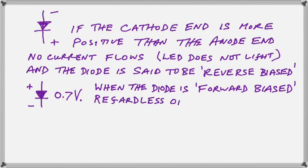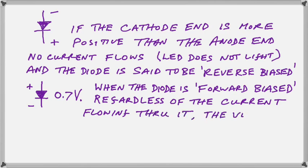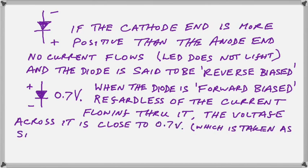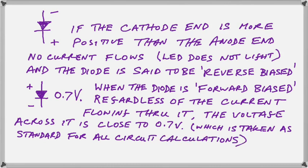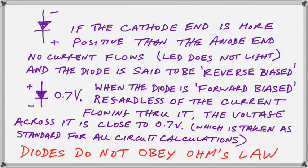Basically, notice I have 0.7 volts written next to the symbol. When the diode is forward biased and current is flowing through it, there will always be a constant voltage across the part of 0.7 volts. This is so different to a resistor where the voltage depends entirely on the current flowing through it. Here we are always getting 0.7 volts no matter what current is flowing. So obviously, diodes do not obey Ohm's law.